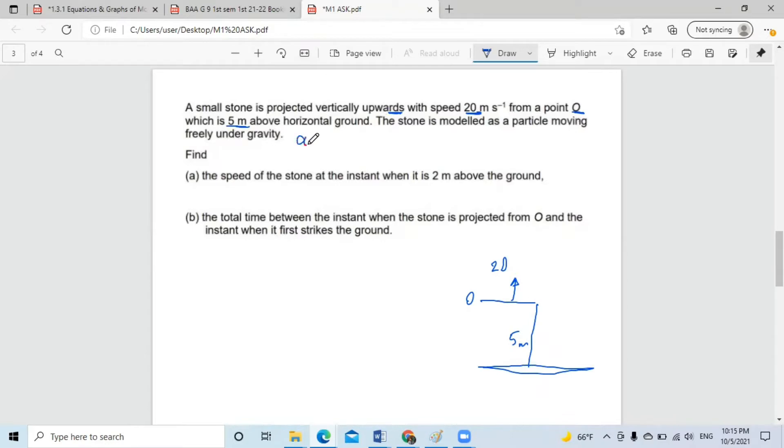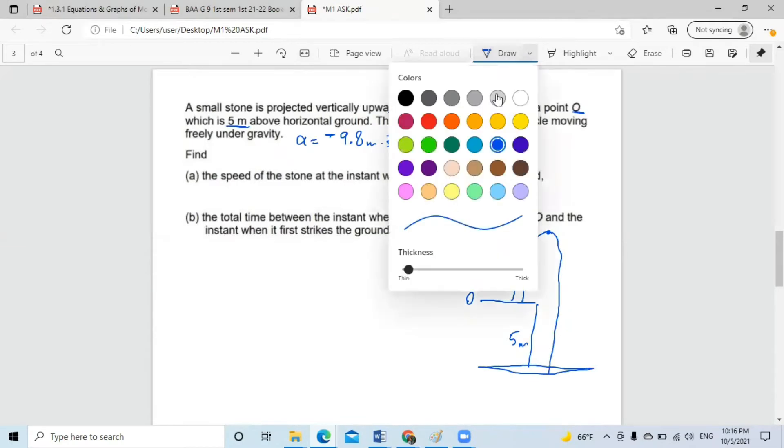That means the acceleration is negative 9.8 meters per second squared. Why we say negative? Because it's going up. So it would be decelerating, slowing down because the gravity is down until it reaches maximum height. Then it falls down.